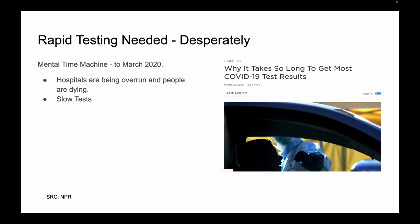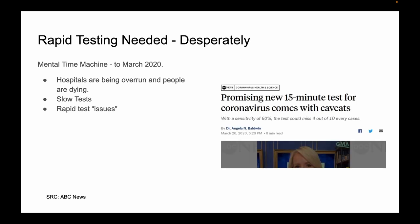March 2020, people are dying, Spain, Italy, and New York hospitals are being overrun with COVID. Not everyone had COVID. It took a long time to get test results back. PCR tests take three days to return. People were trying to come up with rapid tests, but only detecting 60% of true positives was considered promising.